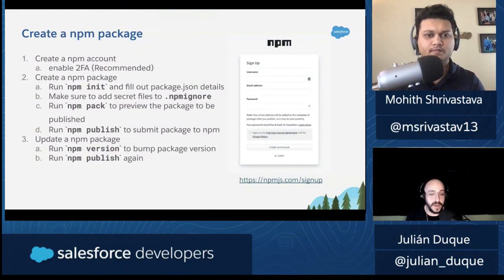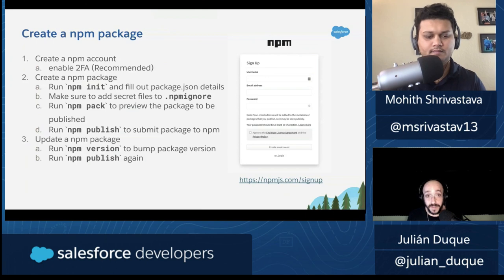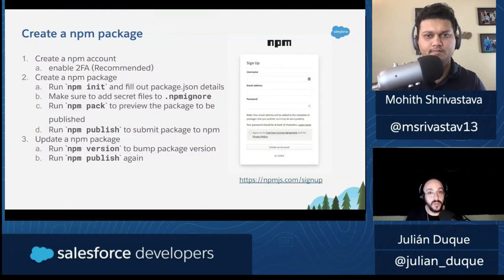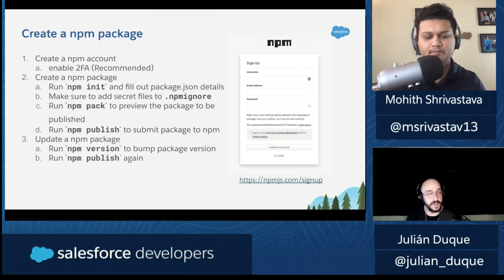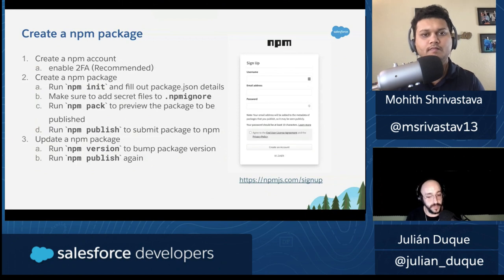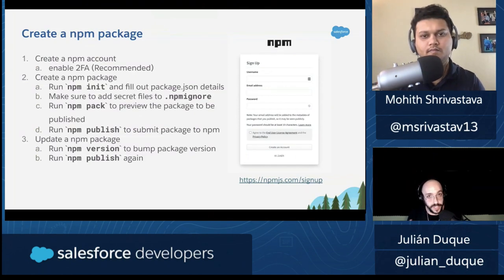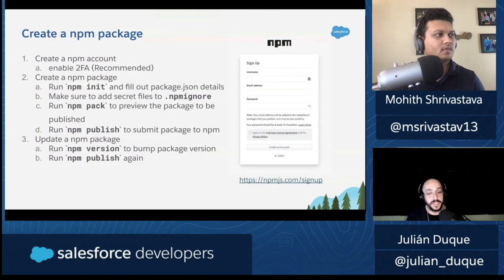Now that we have an account, we will need to create an NPM package. An NPM package is the same as a Node.js application — you will need to create a folder with a file called package.json. The package.json contains the metadata for a JavaScript or Node.js project: the name, description, author, version, production dependencies, development dependencies, scripts, and more. The best way to create a package.json is to run npm init, which shows you a small wizard on the CLI, asks a couple of questions, and creates a package.json for you.